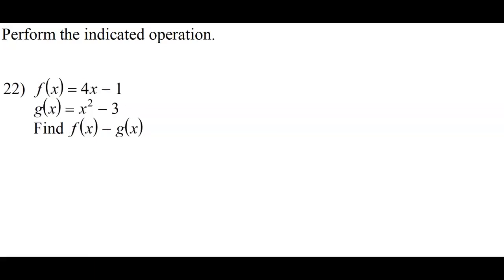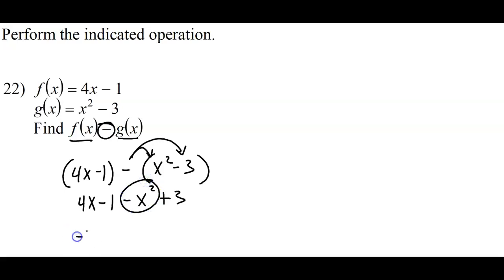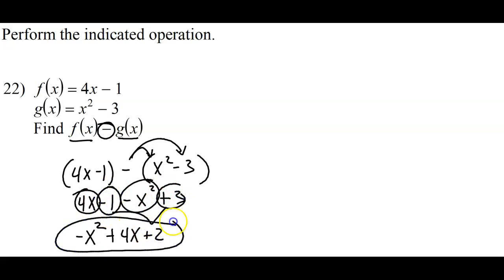Let's do another one — same stuff, just more practice. This time they want me to take the f function and subtract the g function. f of x is 4x minus 1, and g of x is x squared minus 3. Don't forget that when you're subtracting, you need to distribute the negatives — so this becomes 4x minus 1 minus x squared plus 3. Notice the signs change in the second set because of the distributed negative. Put terms in descending order from highest power to lowest, combining any like terms.